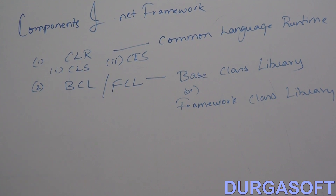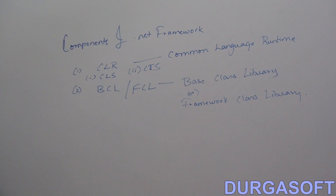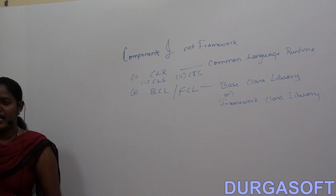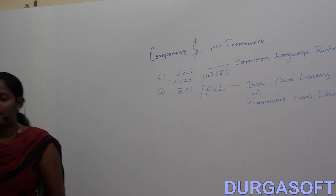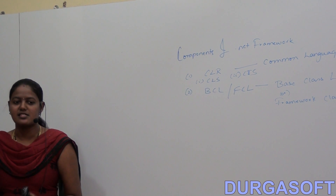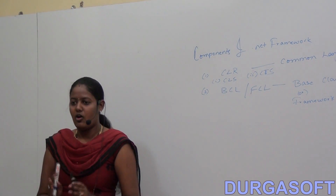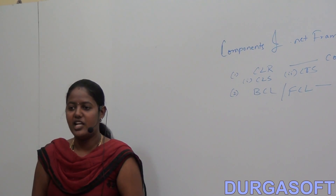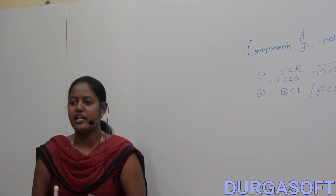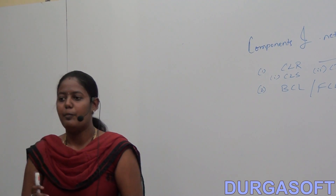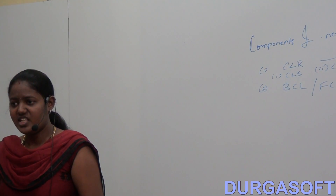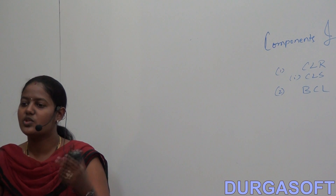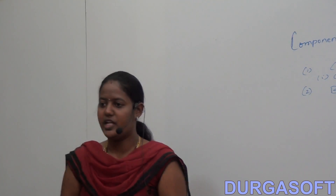CLR is the Runtime Execution Engine of our .NET. It acts as the interface between .NET applications and the operating system. The CLR provides many features: it loads and executes the code, manages the memory, converts the intermediate code to native code, and handles exceptions.